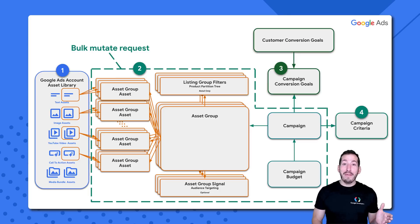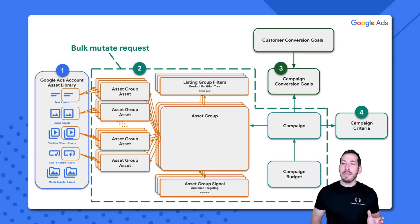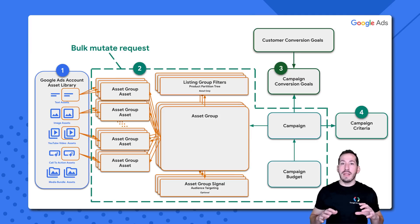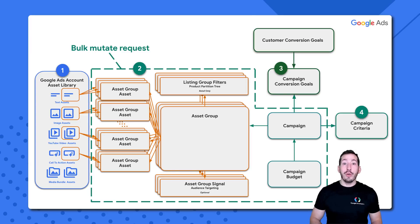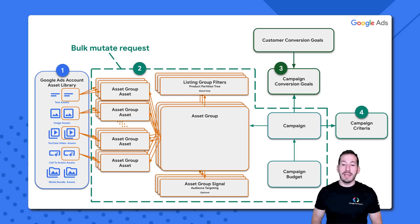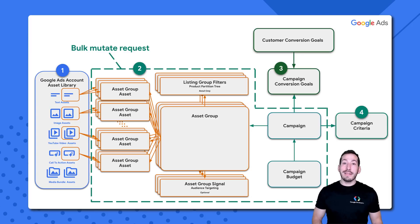Number one, we're going to create some assets. Number two, we're going to issue what's called a bulk mutate request — I'll link some documentation in the description. Effectively, we're going to take the entities required for a valid serving Pmax campaign, group them together, and issue a single request to create them all at once. Those include a campaign, a campaign budget, one or more asset groups, and related entities such as an asset group asset, which is how we link our assets to our asset groups. Then we'll issue a request to set those custom campaign-level goals and also add some campaign criteria.